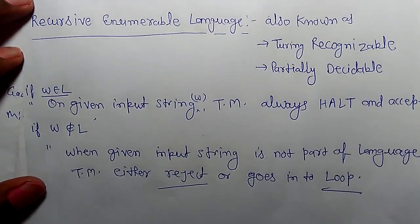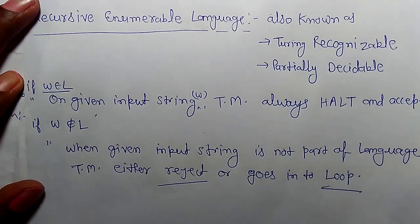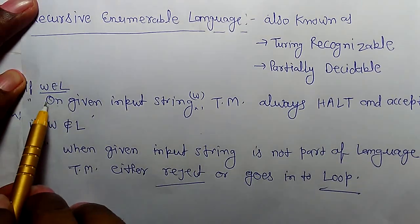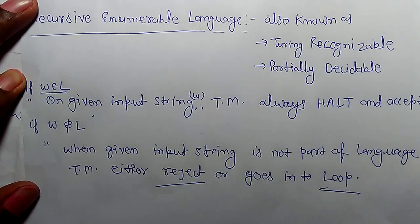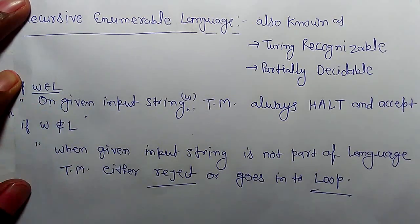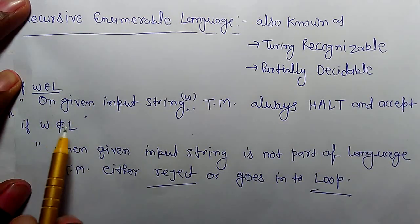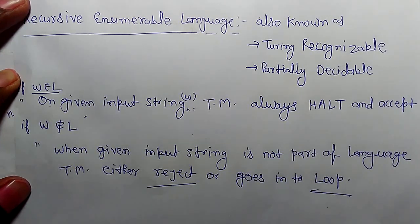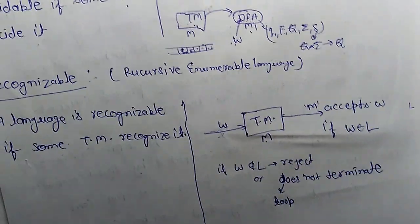Next is recursive enumerable language, also known as Turing-recognizable, partially decidable, or semi-decidable language. The definition is: on a given string w, a Turing machine always halts and accepts if w belongs to the language. If the string does not belong to the language, then it may reject or go into an infinite loop.